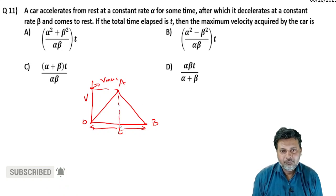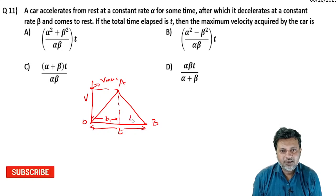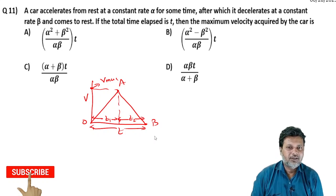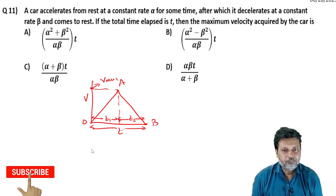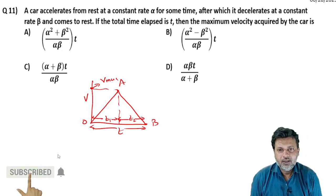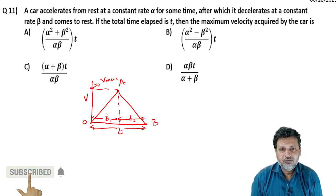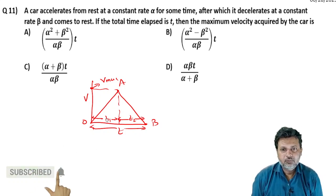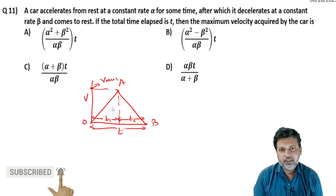तो हम कहते हैं कि accelerate करने का time T1 मान लेते हैं और decelerate करने में time लगा T2। Finally rest पर आ गया। अगर मैं T1 की value निकालूं, पहली journey जब speed बढ़ रही है।